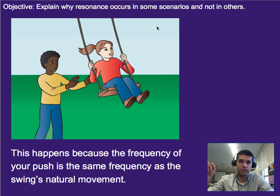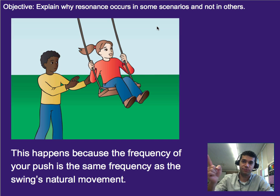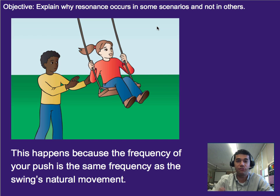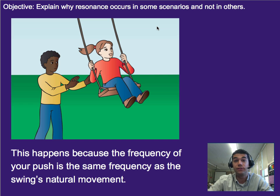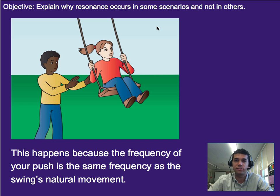If you stop pushing, the person would naturally go at a certain frequency while they kind of slowed down eventually. Now, if you match this at the right time, then you're driving that swing to kind of go higher and higher. You can think of it as constructive interference — you're kind of adding to the wave each time.